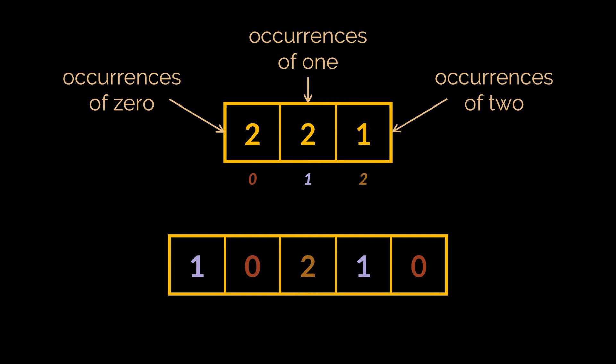Finally, two appears only once, so the value stored under index two is one. Now how will this new array help us with the sorting? All we have to do is iterate over this new array and print the value of index zero twice, followed by two ones, and end with a single two. And here it is — our array is sorted. This was a very simple example just to showcase the counting sort algorithm.